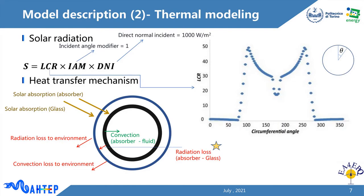To apply the ray-tracing thermal modeling, solar radiation was first simulated using data from the literature, which led to the distribution of local concentration ratio on the tube wall. As shown in the right figure, the parabolic configuration of the reflector results in two peak values on the wall of the tube, roughly located at the bottom section. Referring to the linear arrangement of parabolic trough collectors, this distribution is longitudinally uniform.